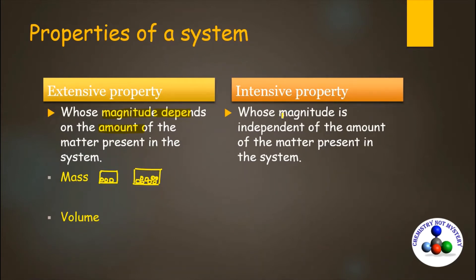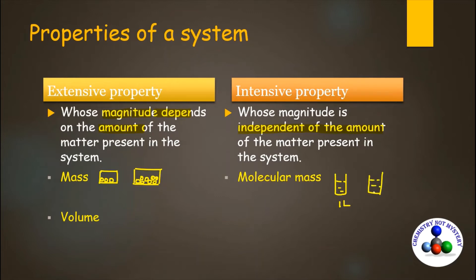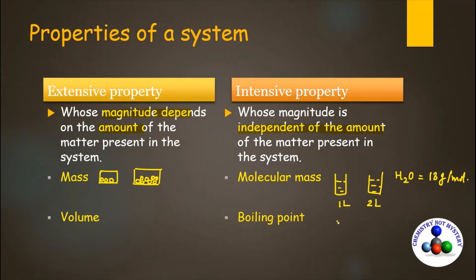Now let's look at intensive properties. Intensive properties are properties whose magnitude does not depend on the amount of matter in the system. For example, molecular mass — if I have two glasses of water, one with one liter and the other with two liters, both have a molecular weight of 18 grams per mole, which does not depend on the amount of matter. In the same way, boiling point is an intensive property. Both one liter and two liter glasses of water have a boiling point of 100 degrees centigrade.